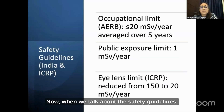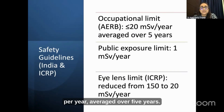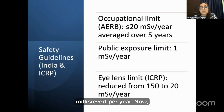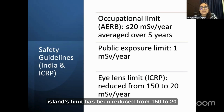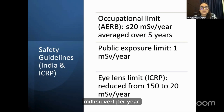When we talk about safety guidelines, the occupational limit is less than 20 mSv per year, averaged over 5 years, and the public exposure limit is 1 mSv per year. The lens limit has been reduced from 150 to 20 mSv per year.